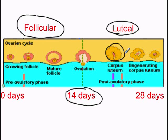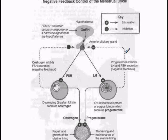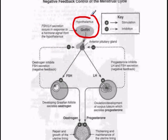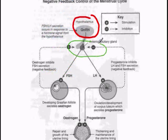Here is a negative feedback loop putting all these pieces together. We start up here in the hypothalamus — that's in the brain — and the hypothalamus is releasing gonadotropin-releasing hormone, which goes down and influences the pituitary. And the pituitary, in response to that, will produce its two hormones.